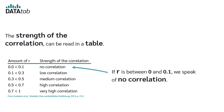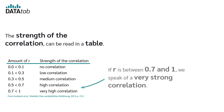If r is between 0 and 0.1, we speak of no correlation. If r is between 0.7 and 1, we speak of a very strong correlation.